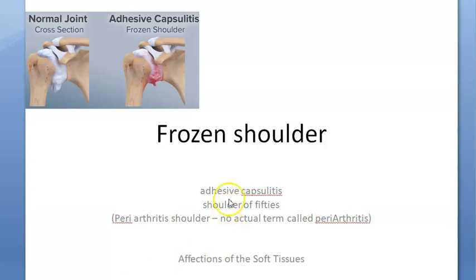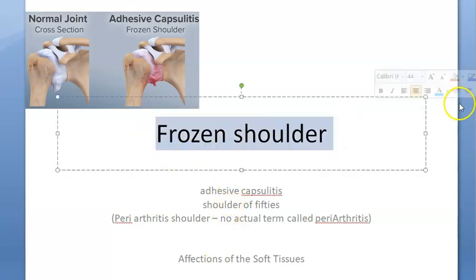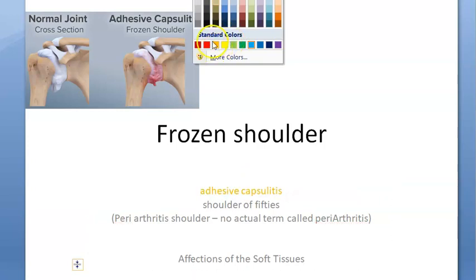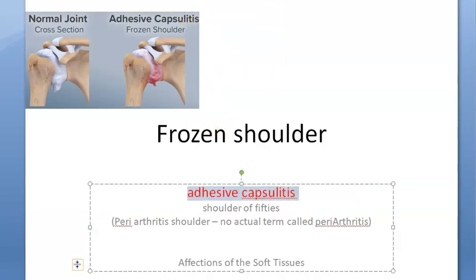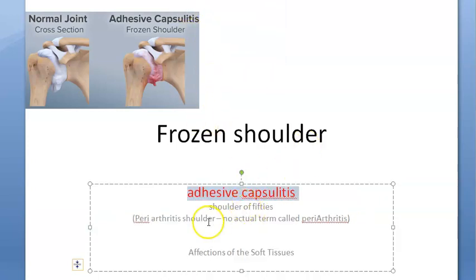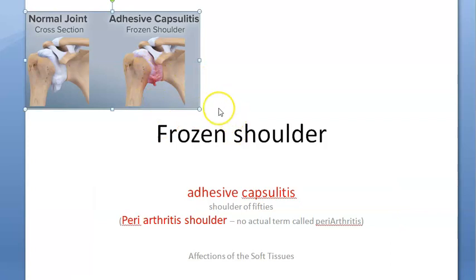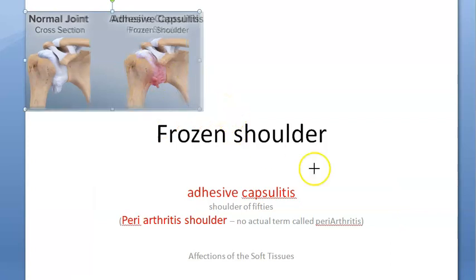In this video we want to address frozen shoulder, an orthopedics subject. The other name is adhesive capsulitis. It's also called periarthritis shoulder or shoulder of the 50s, but the term periarthritis shoulder is not favored because they say there's nothing called periarthritis. The preferred term is adhesive capsulitis.